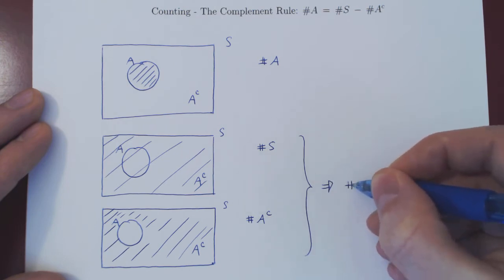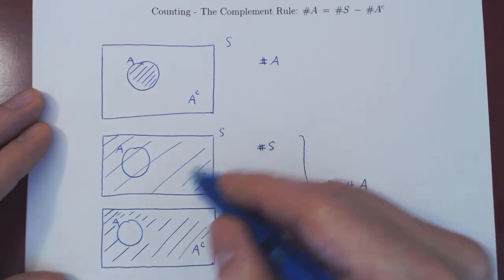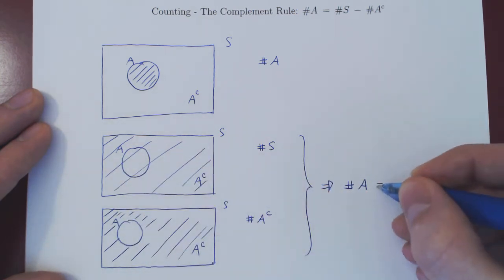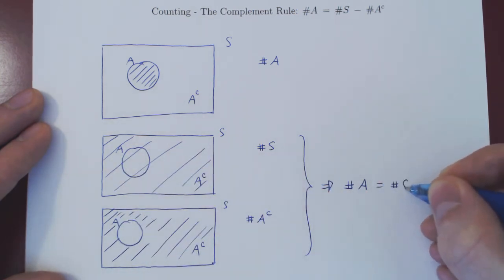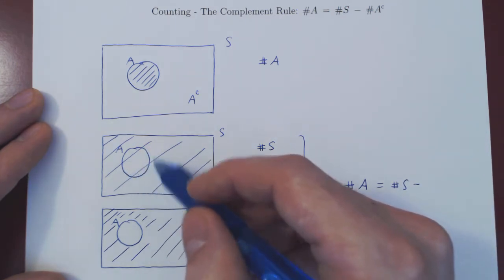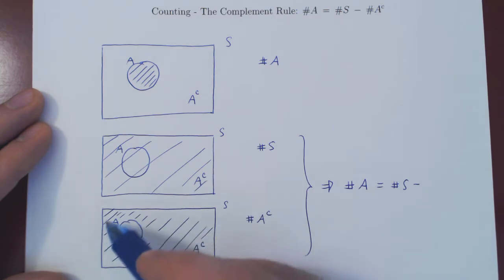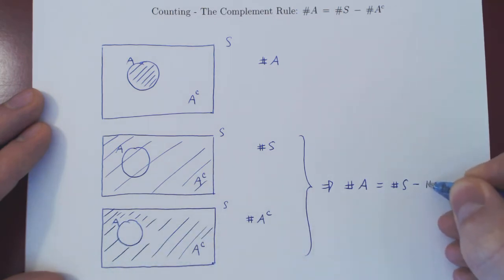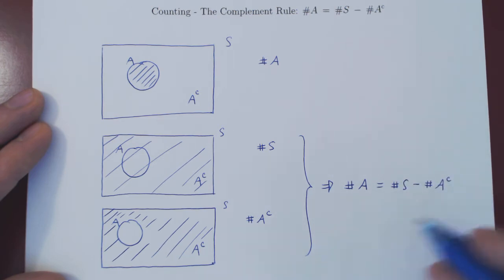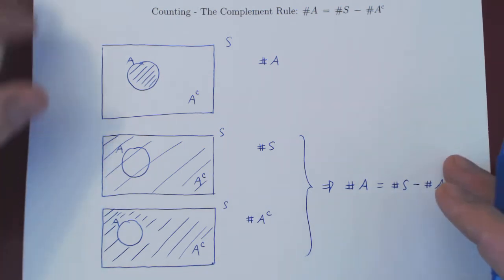So if you remove everything outside of A, you're clearly going to be left with the elements inside of A. This is your complement rule: the number of elements in A can be obtained by starting with everything and then removing everything outside of A, which is A complement. That's the complement rule visualized with the help of a Venn diagram. Now let's consider an example.